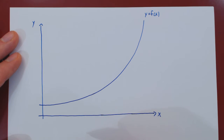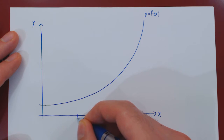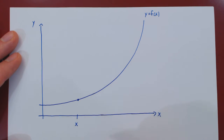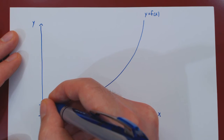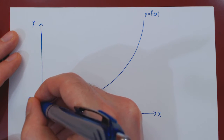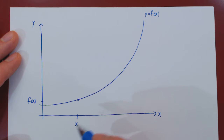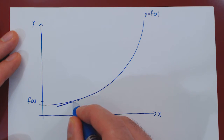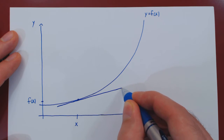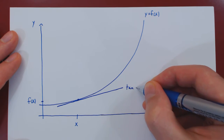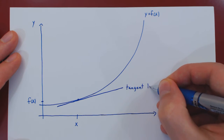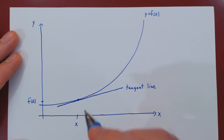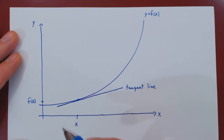Let's take an arbitrary point on the curve — say this is the point x, and correspondingly the y value is f of x. At this point, assuming the curve is smooth enough, it will have a unique tangent line. By definition, the slope of the tangent line to the curve at this point is the derivative of the function, and this is what we want to find.